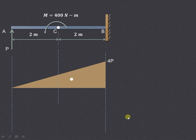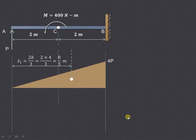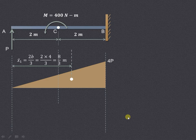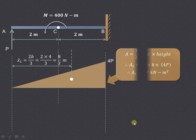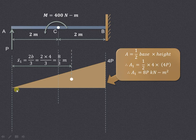Now let us look at the centroid of this particular triangular section. We know that the centroid will act at a distance of 2 times base upon 3, and base of this particular triangle is 2 plus 2 that is 4, so it is 8 upon 3. Area is equal to 1 half base into height. So base is 4 and height is 4P, so area is 8P kNm².